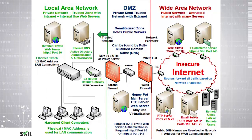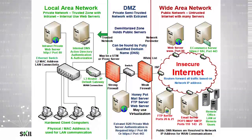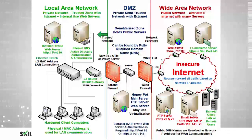This network perimeter is typically where our internet service provider provides us connectivity to the internet. From the internet, individuals can access our web server, our e-commerce server to purchase items, our FTP server to download files, and our email servers to send and receive messages. We can also have remote office LANs or remote users who are able to remotely connect using virtual private network technology to access our internal resources on the private network.